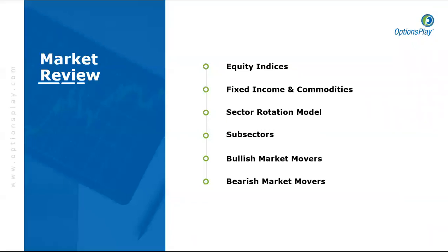Our agenda for today: kicking off with the major equity indices, highlighting key areas of support and resistance. There's a lot of ambiguity in the markets in recent days, no surprise, due to the fact that we're going to be having a Fed meeting next week with most likely an announcement on a 50-point rate increase. From there, we'll move on to fixed income and commodities, the sector rotational model highlighting which sectors are outperforming and underperforming, and we'll end with some bullish and bearish market observations.